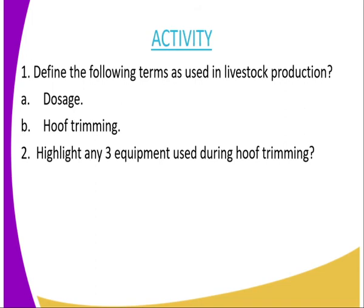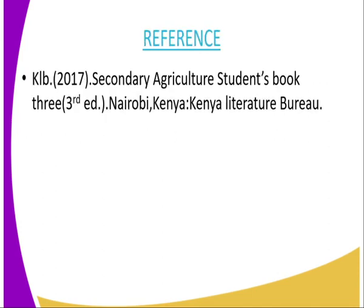For today's activities: question one, define the following terms as used in livestock production — (a) dosage, and (b) hoof trimming. Question two, highlight any three equipment used during deworming. For reference, you can refer to the Secondary Agriculture Student Book Three, published by the Kenya Literature Bureau.